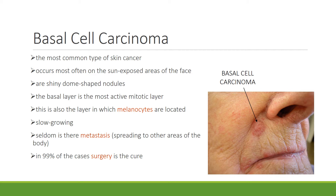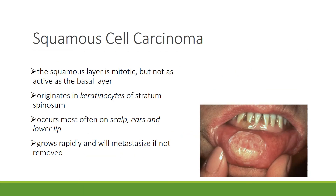The basal layer is also where the melanocytes are located. These types of cancers are slow growing and very rarely is there metastasis — that is, spreading to other areas of the body. In 99% of cases, surgery is the cure.